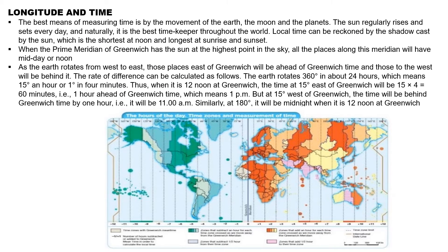Now, longitude and time. The best means of measuring time is by the movement of the earth. The earth moves, the moon moves, and the planets move. The sun regularly rises and sets every day, and it is the best timekeeper throughout the world.